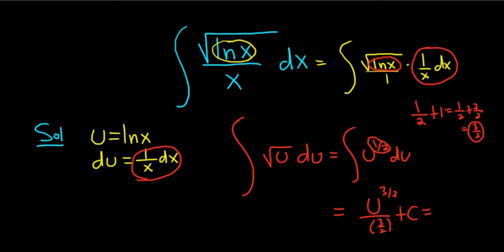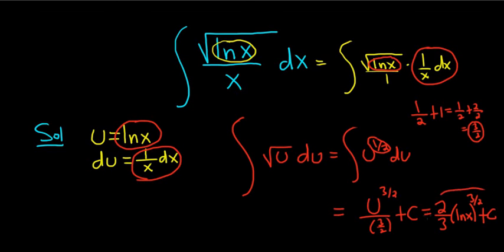That's the power rule. The last thing to do is clean up this fraction. When you divide by 3/2, you really multiply by the reciprocal, so it's 2/3. Then replace u with what it was — u is the natural log of x. So this is (2/3)(ln x) to the 3/2, plus our arbitrary constant of integration c. That is the final answer. I hope this video has been helpful to someone learning u-substitution.